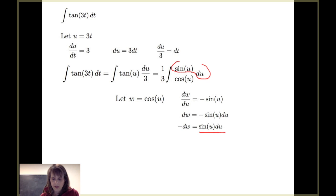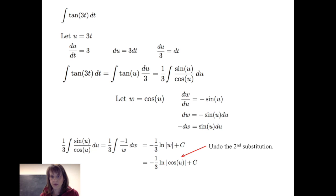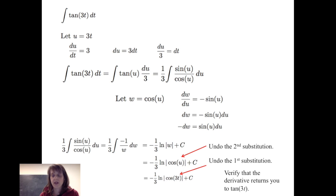Substituting, 1 third times the integral of sine of u over cosine of u du becomes 1 third times the integral of negative 1 over w dw, which is an application of a basic integration technique. This gives negative 1 third the natural log of the absolute value of w plus c. We first undo the substitution of w with cosine of u, then undo the original substitution and replace u with 3t, giving us negative 1 third the natural log of the absolute value of cosine of 3t plus c.